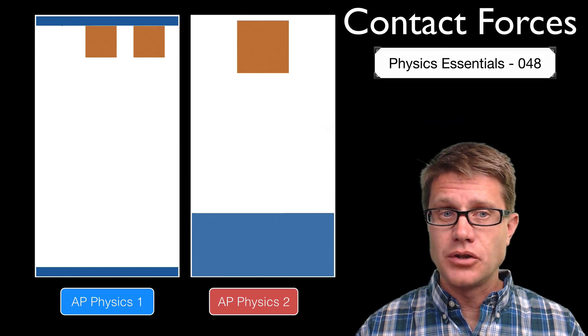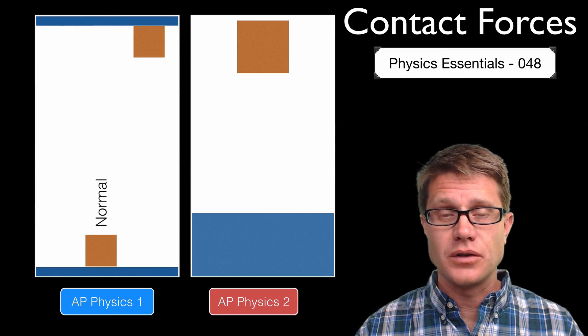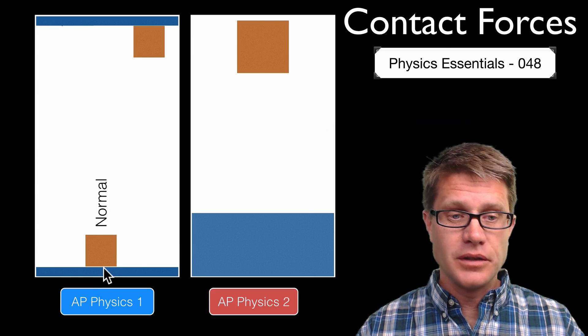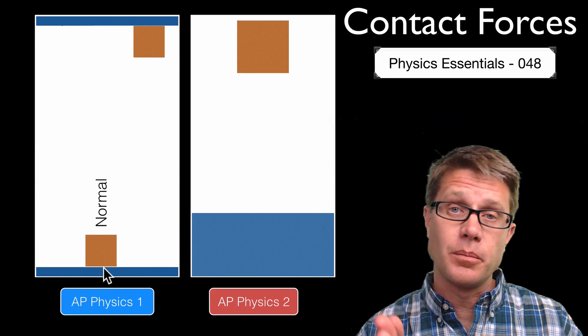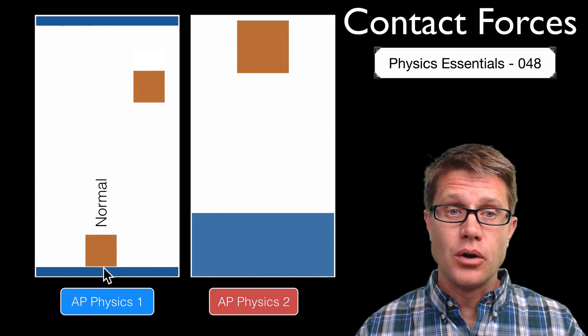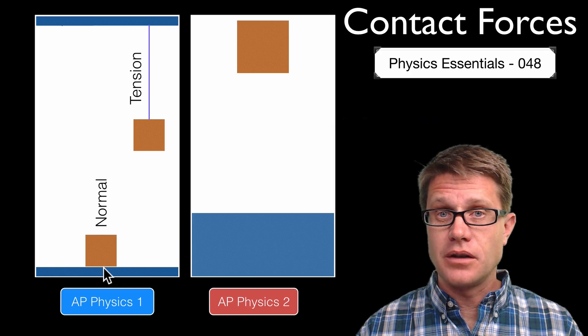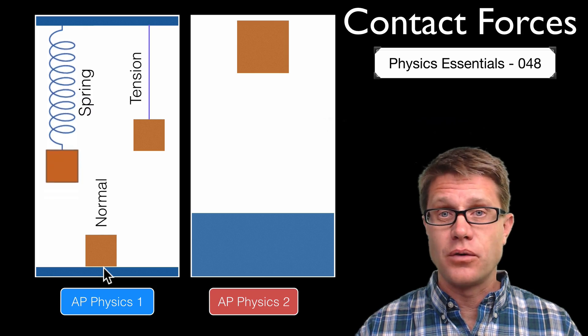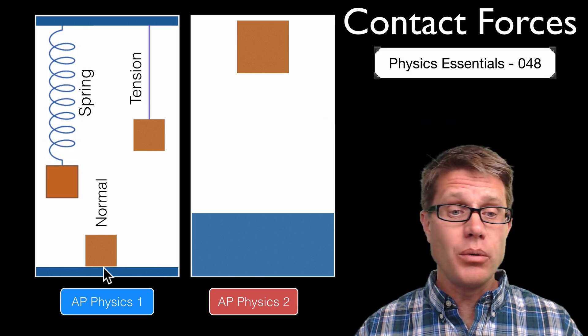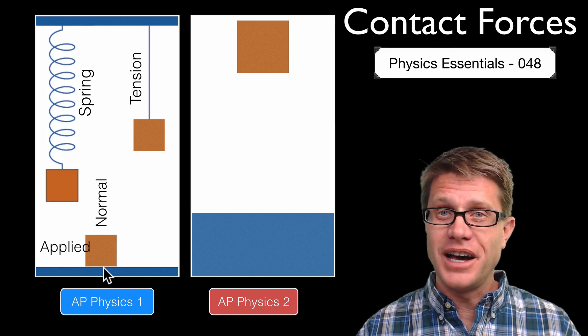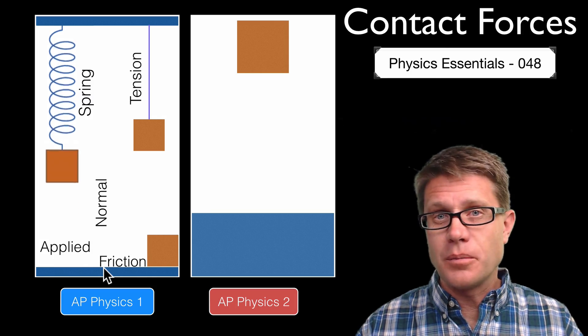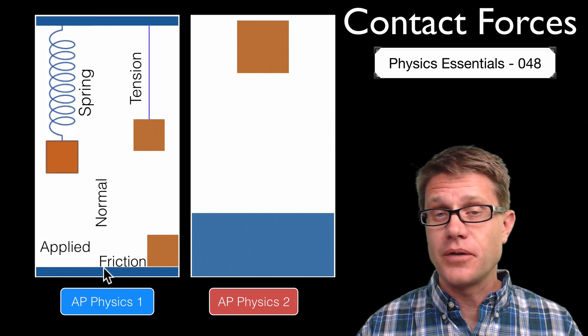And so in AP Physics 1 you should understand a number of contact forces. Like the normal force—if this object sits on a table, the table is exerting a normal force which is perpendicular to the table. Or if we have this object hanging from a string there is a tensional force. Or by a spring we have a spring force applying a force both up and down. Or we could apply a force, we call that an applied force to the object and we move it across the table. But there is going to be a force that opposes that motion and we call that a frictional force.